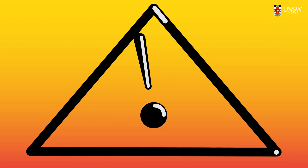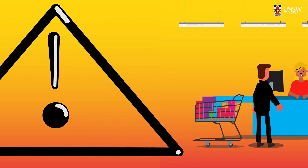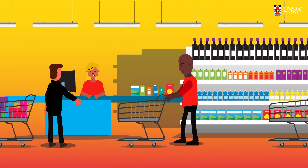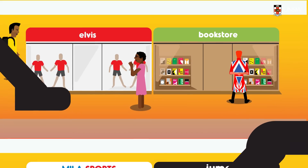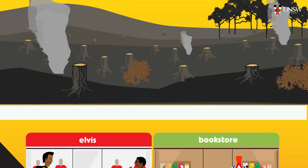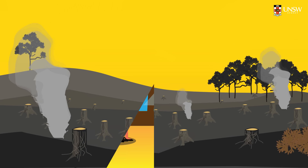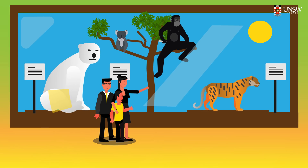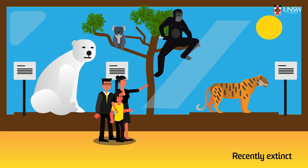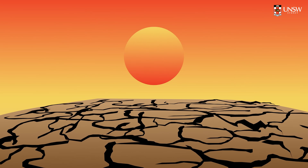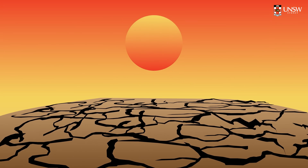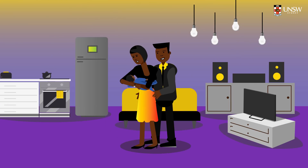Humanity is facing a crisis. If we continue on our current path of overconsumption of products and services, Earth will run out of resources, thousands of species will be driven to extinction, and our planet's climate will be dramatically altered. So, how do we prevent devastation from occurring?